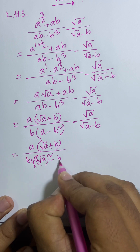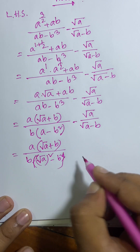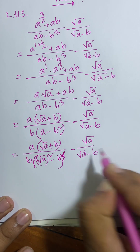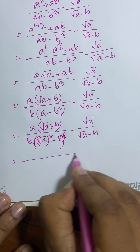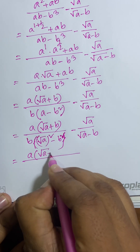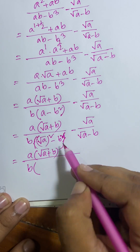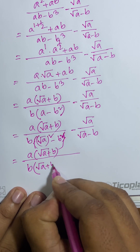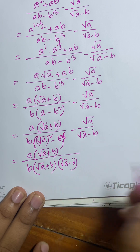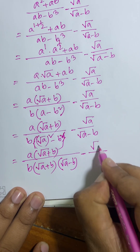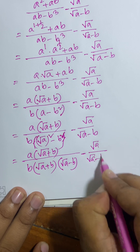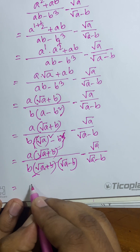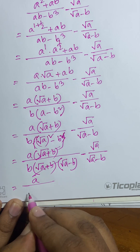Now: root over a times root over a equals a, so root over a over (root over a minus b). Then (root over a plus b) times (root over a minus b) equals a minus b squared — applying the difference of squares identity: (a plus b)(a minus b). Now (root over a plus b) and (root over a plus b) cancel out.